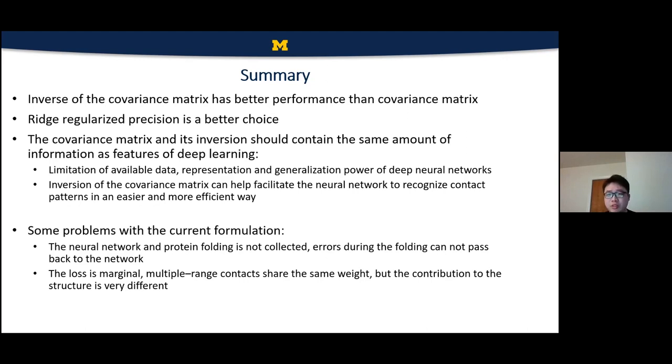You may also see some problems with the current pipeline for protein structure prediction. So the first is that the neural network and the protein folding is not connected. So errors during the folding cannot pass back to the neural network and update the parameters of neural networks. And another problem is that the loss function is marginal, actually. So multiple range contacts, they share the same weight, but the contribution of them to the structure should be very different. So I think one possible solution to this problem is figuring out an end-to-end structure of protein structure prediction. And which I think AlphaFold, the most recent version of AlphaFold should be one of those solutions.